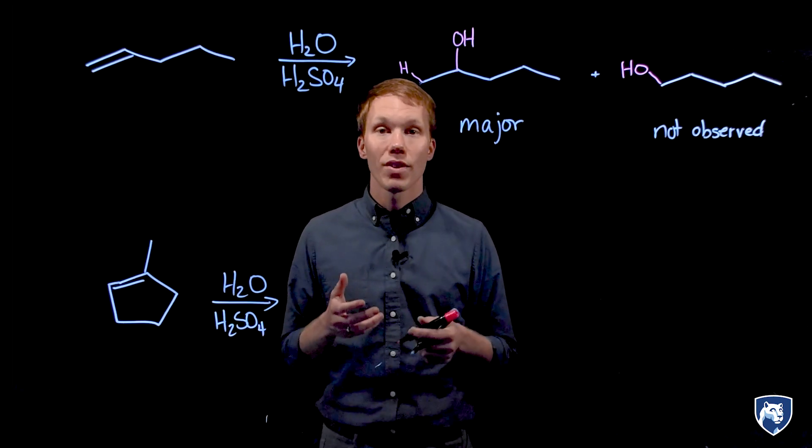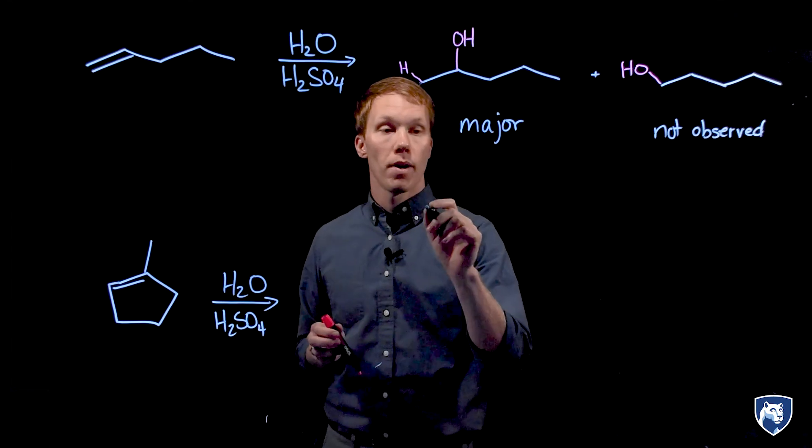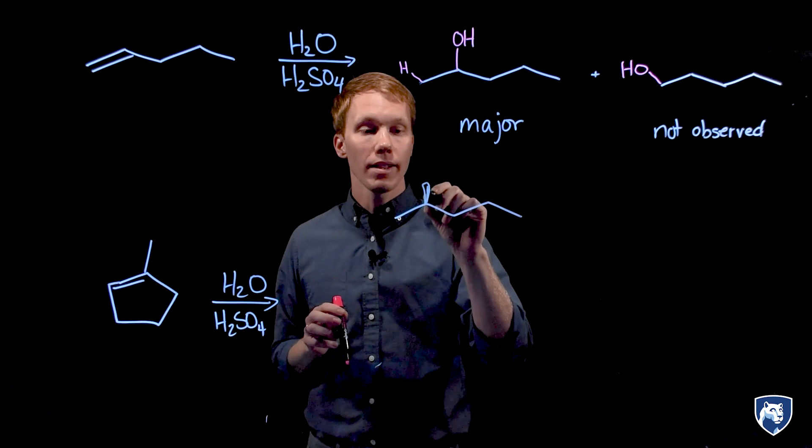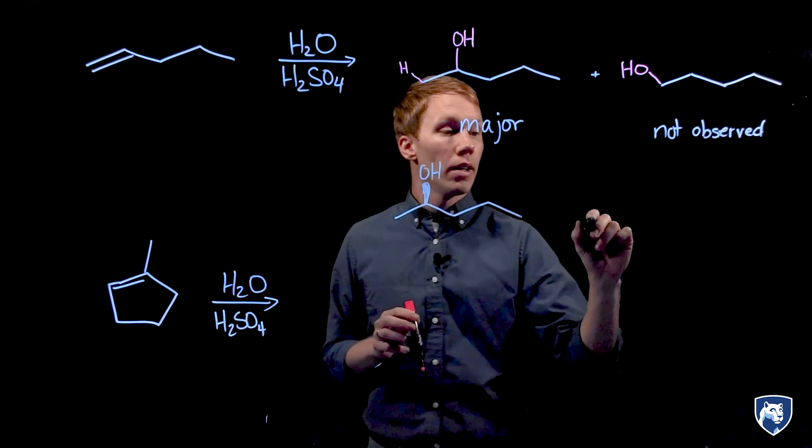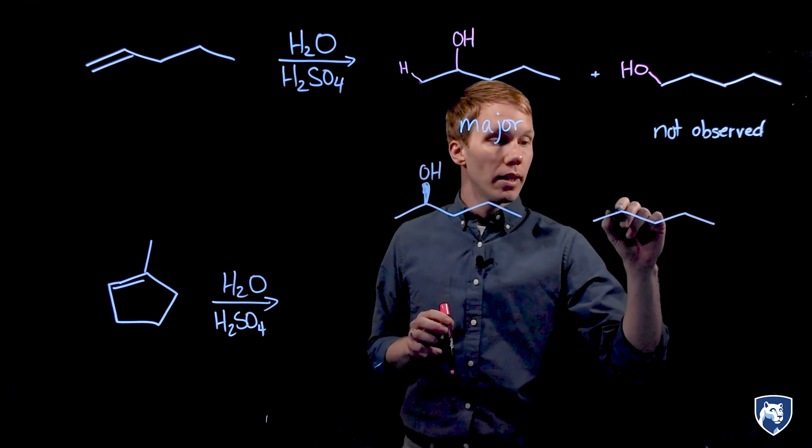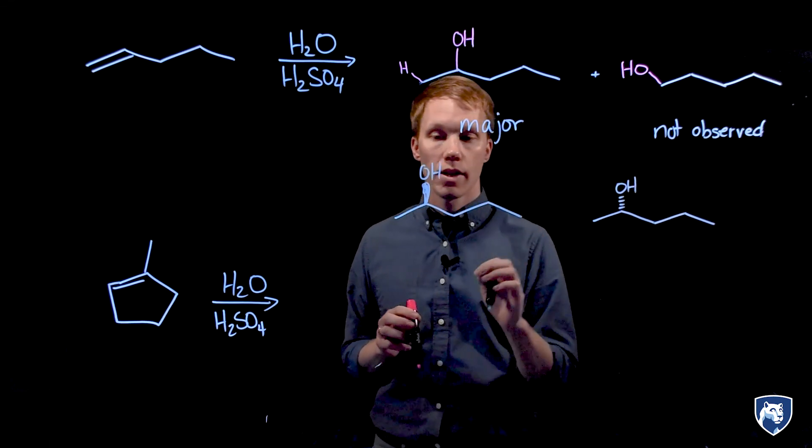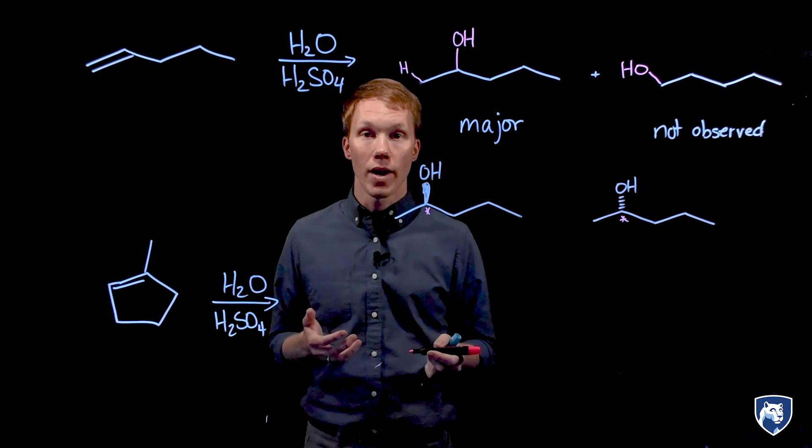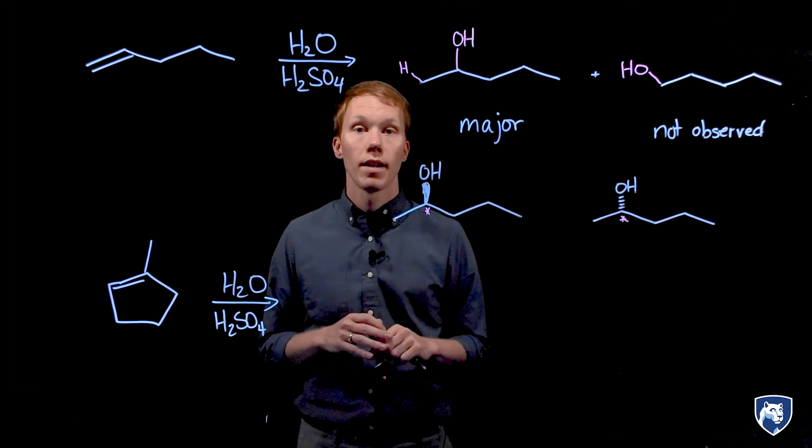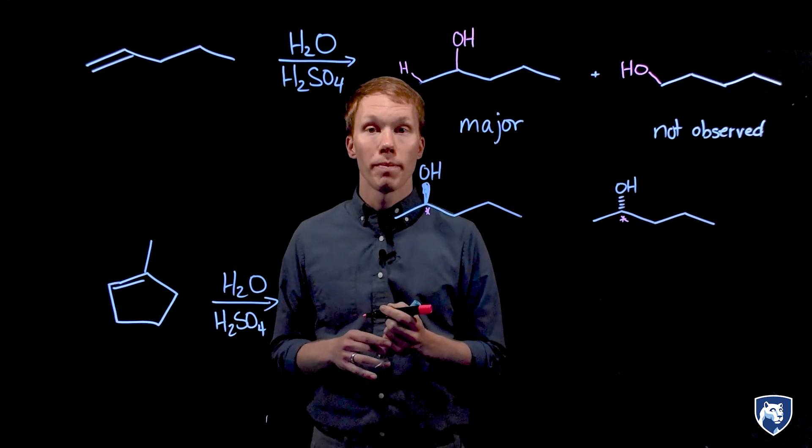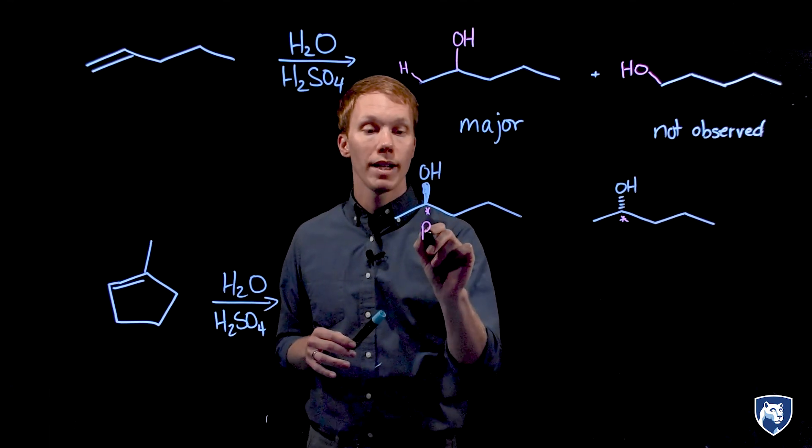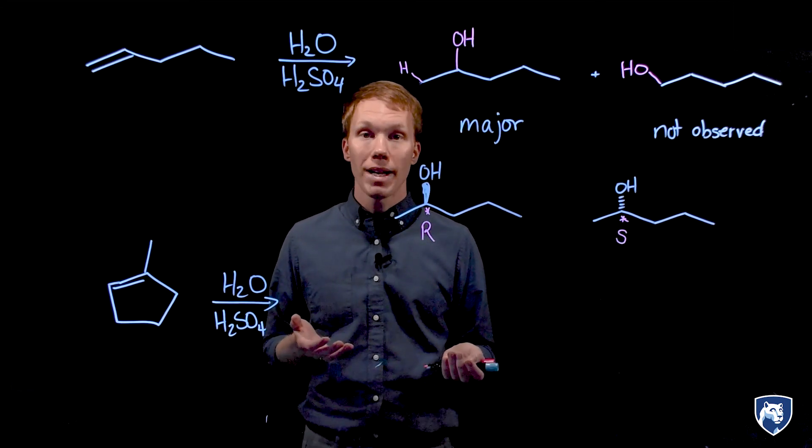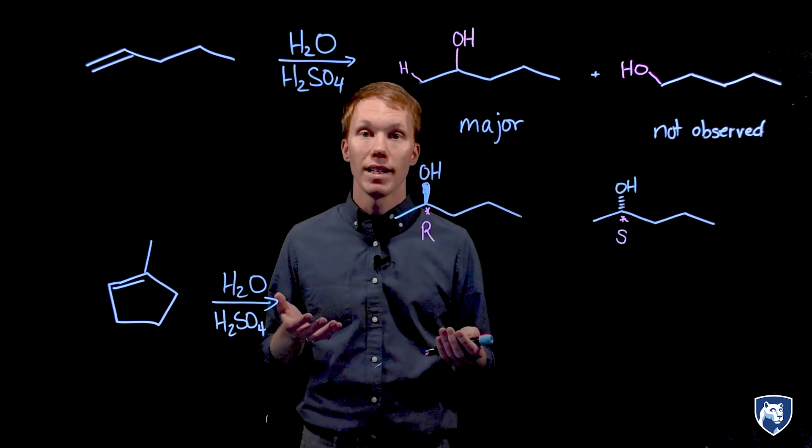Before we move on, let's consider the stereochemistry of our major product. This reaction generated one chiral center, and if we isolate the product, we will find that the products isolated are a mixture of these two stereoisomers. So what is the relationship between these two stereoisomers that I've drawn here? They are enantiomers, non-superimposable mirror images. We have one enantiomer with configuration R and another with the configuration S. These are both produced in equal amounts, so this product mixture is racemic.